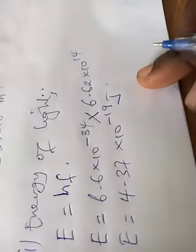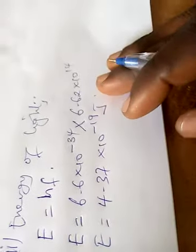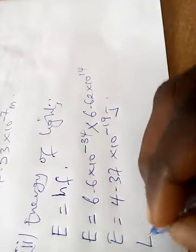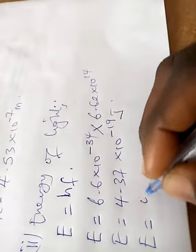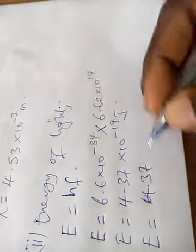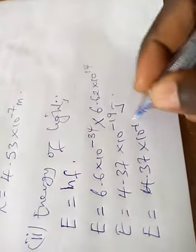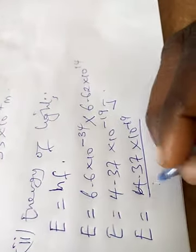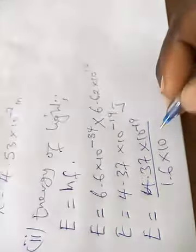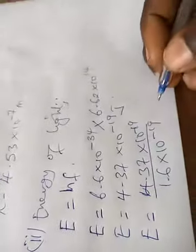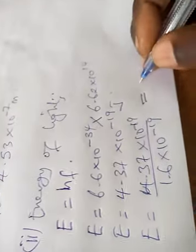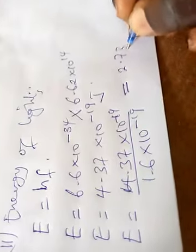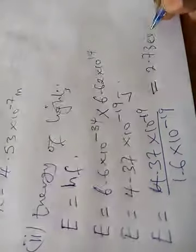We can quickly convert this to electron volts. The energy is 4.37 times 10 raised to power minus 19 joules, and from our calculator this gives us 2.73 electron volts.